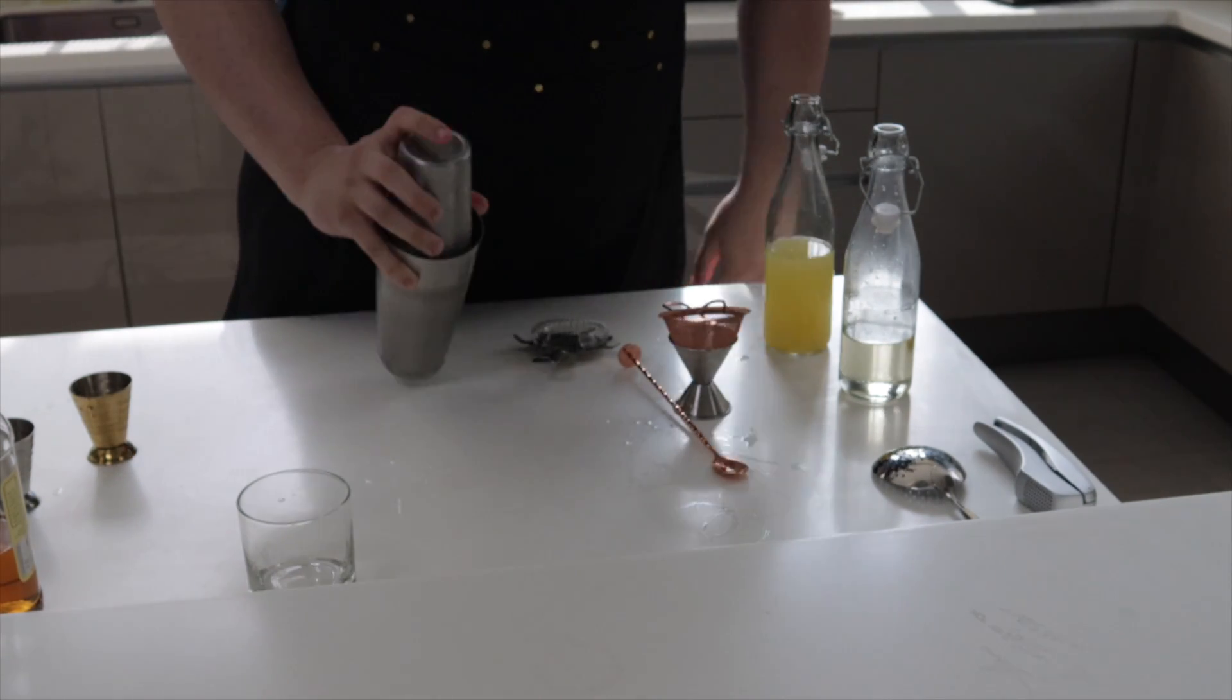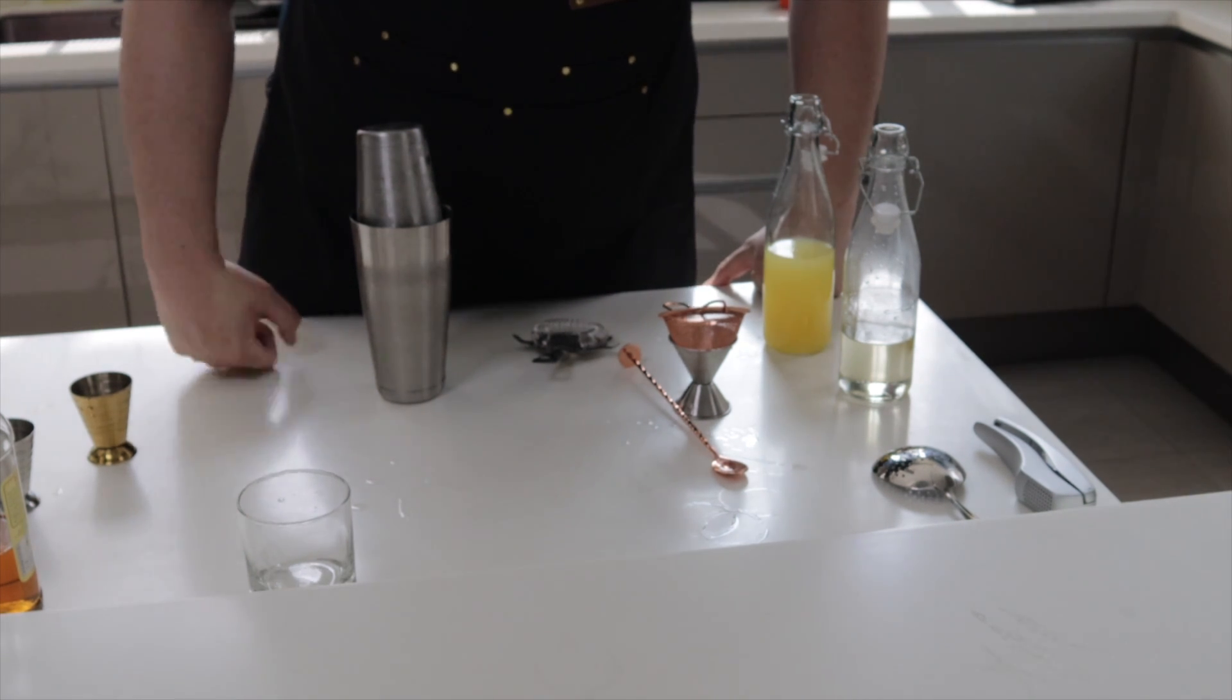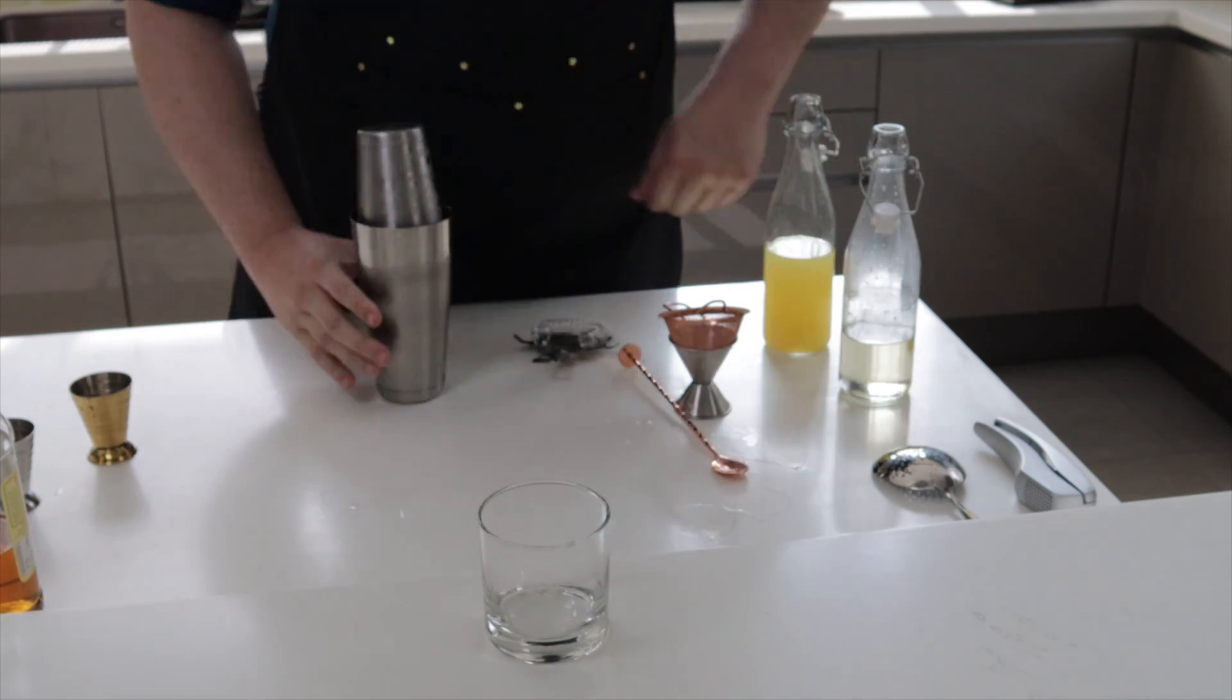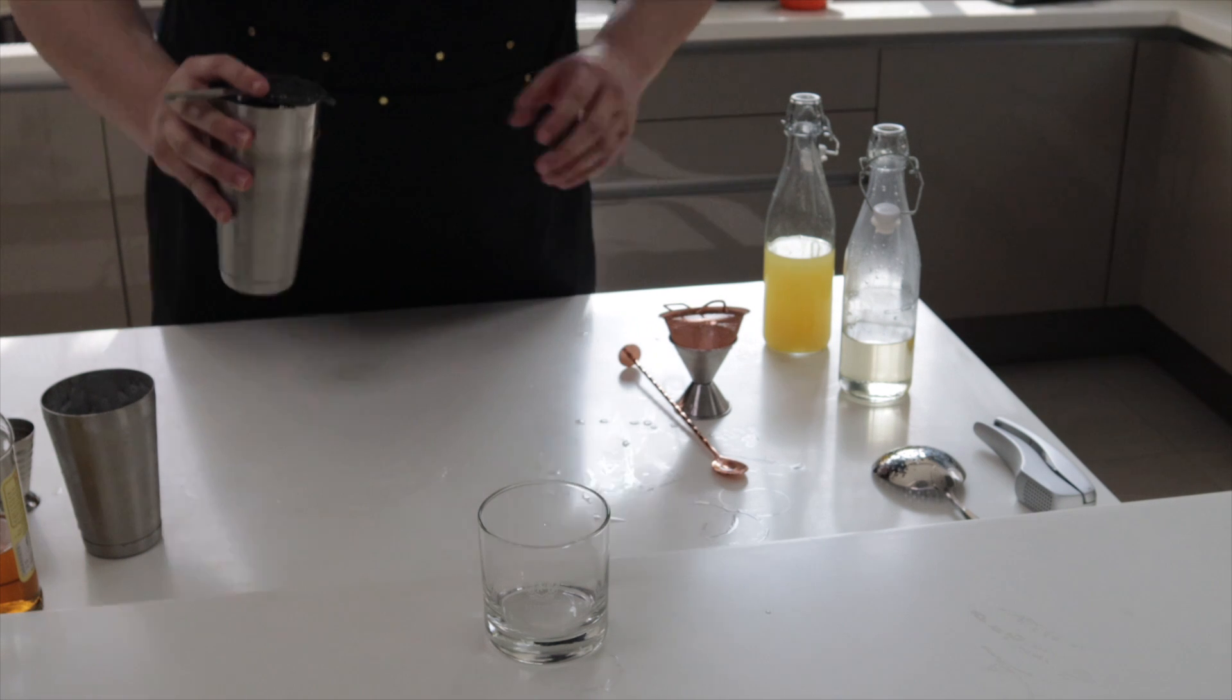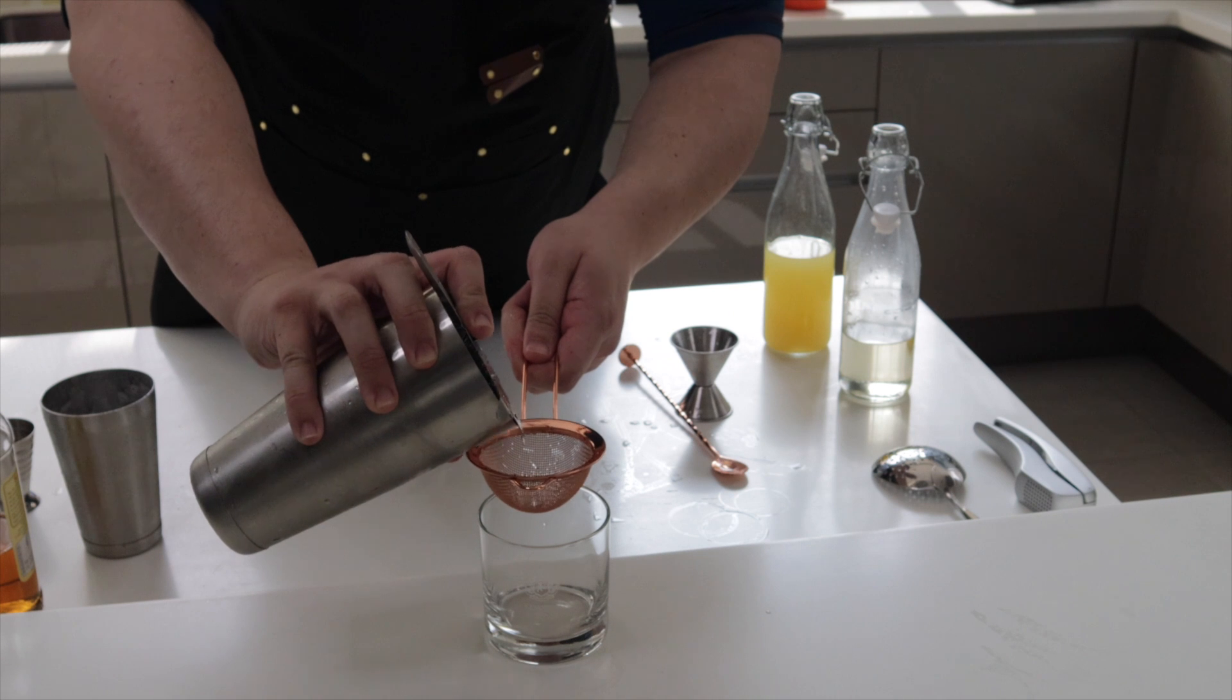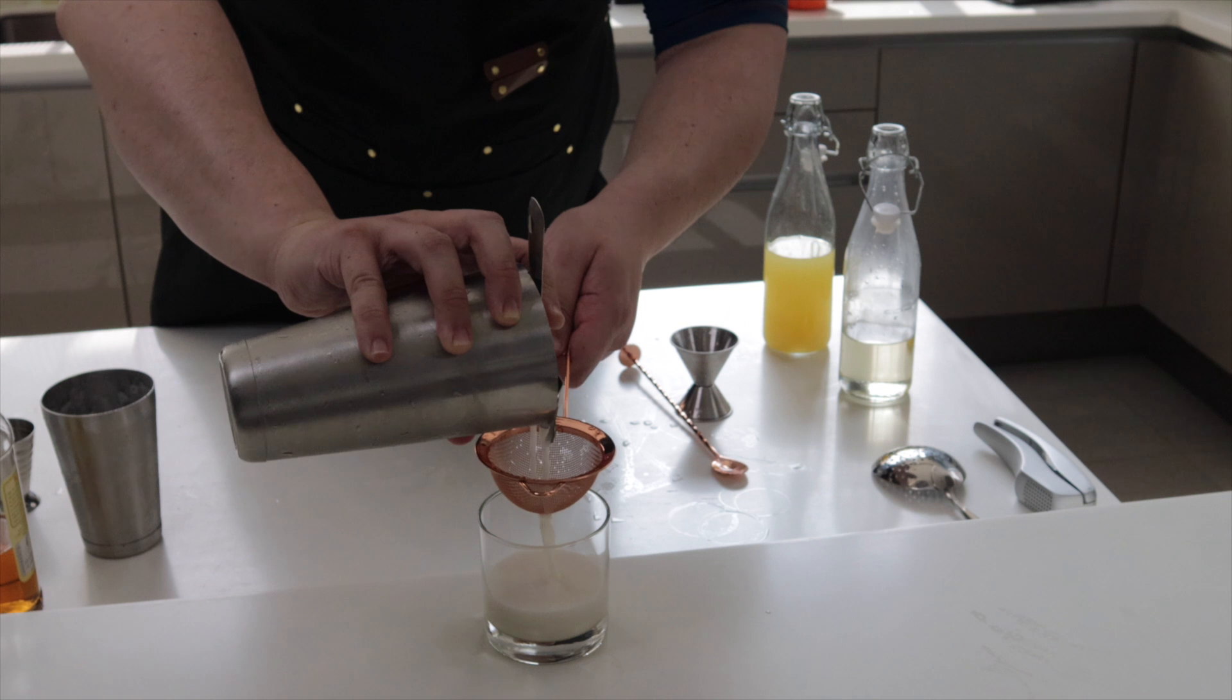We're done. That was hard and the shaker got really cold. We put it in a glass like so. Take the Hawthorne strainer. We need to double strain this - we don't want little shards of ice in our drink. And we pour. Look at that beautiful guy.